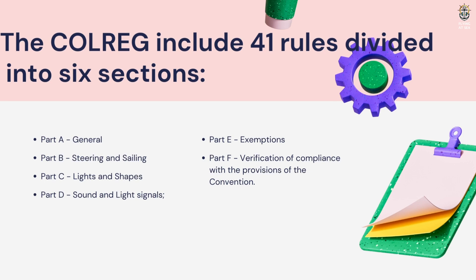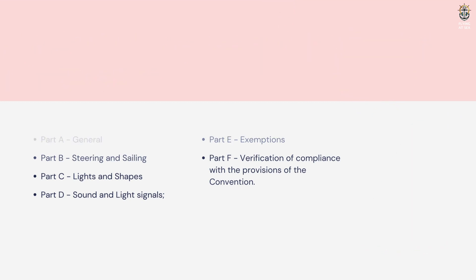Part A, General. Part B, Steering and Sailing. Part C, Lights and Shapes. Part D, Sound and Light Signals. Part E, Exemptions. And Part F, Verification of Compliance with the Provisions of the Convention.